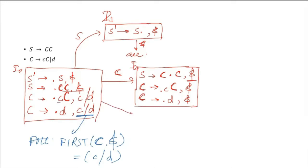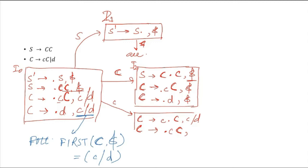Small c is there after the dot, so we have to have a transition for small c. This gives us capital C to small c dot capital C, with c or d as the lookahead, as taken from I0. After the dot, capital C appears, so we have to add production rules headed by capital C: capital C to dot small c capital C with the same lookahead c and d carried forward, because after this capital C there is no other symbol. Then capital C to dot d — the same lookahead c and d will come.